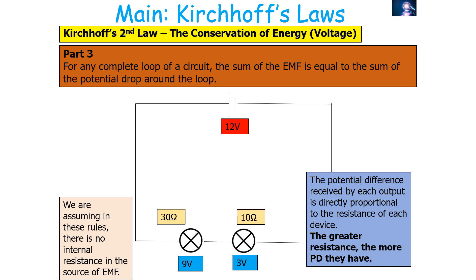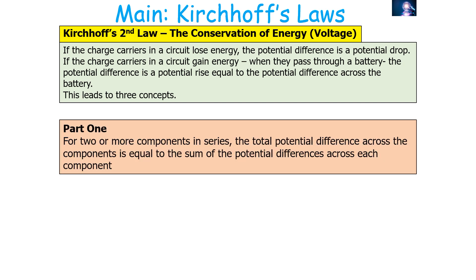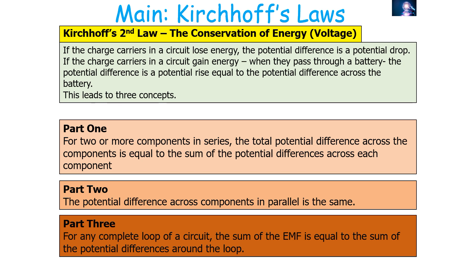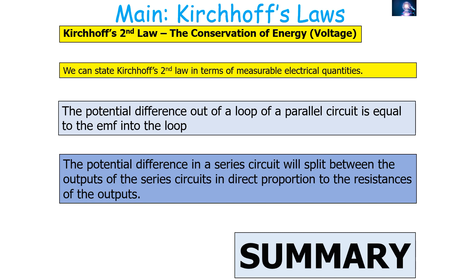A potential divider is achieved when there is more than one PD output in an electrical circuit, and the PD received by each output is directly proportional to the resistance of each device — the greater the resistance, the greater the potential difference. With Kirchhoff's second law: if charge carriers lose energy, the PD is a potential drop; if they gain energy (like passing through a battery), the PD is a potential rise. In summary: for series components the total PD equals the sum of individual PDs; for parallel components the PD is the same; and for any complete loop, the sum of EMFs equals the sum of PDs.